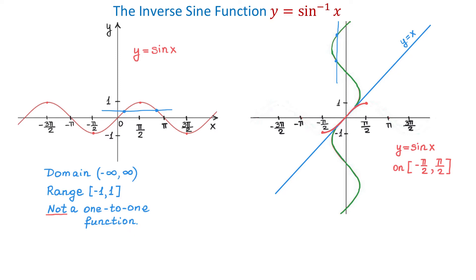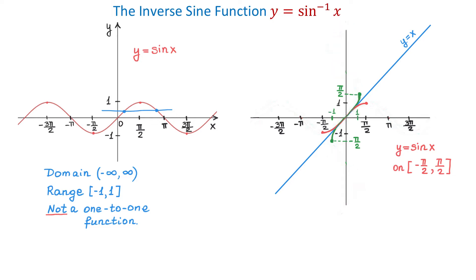This inverse function is y equals inverse sine of x. If we reflect this restricted graph about the line y equals x, the graph of the inverse function will stretch from negative pi over 2 to positive pi over 2. We erase the portions outside this interval, giving us the graph of the inverse sine function.